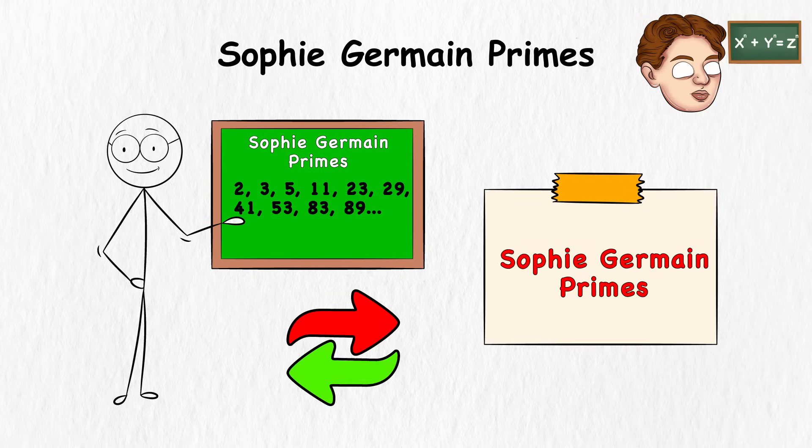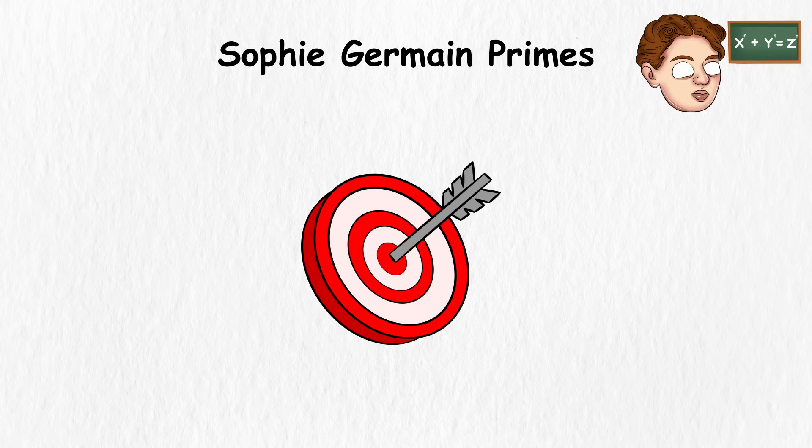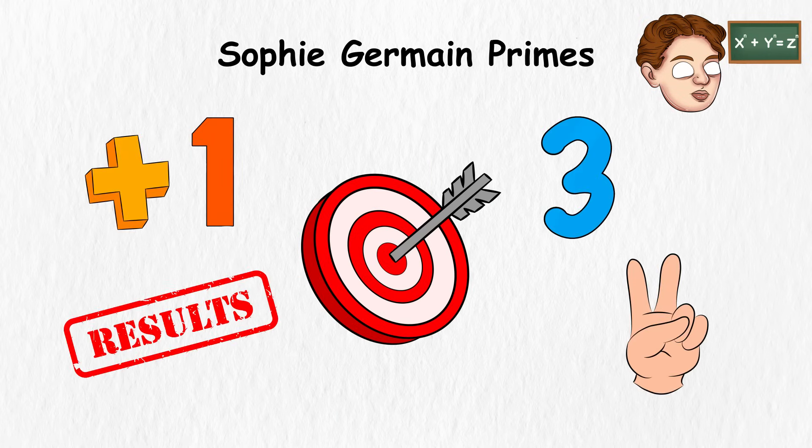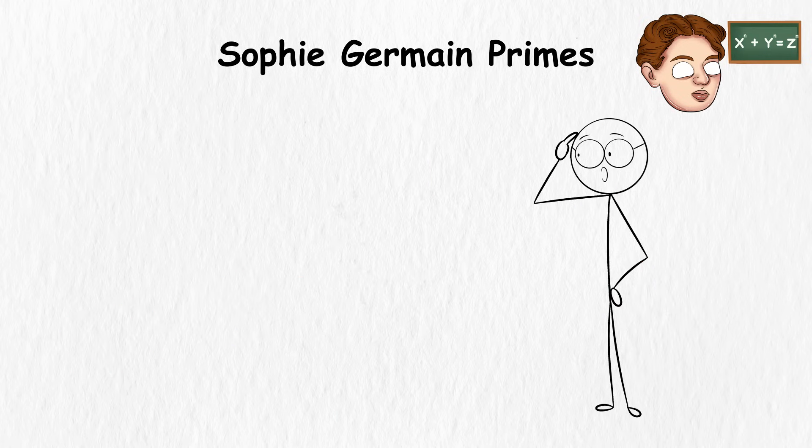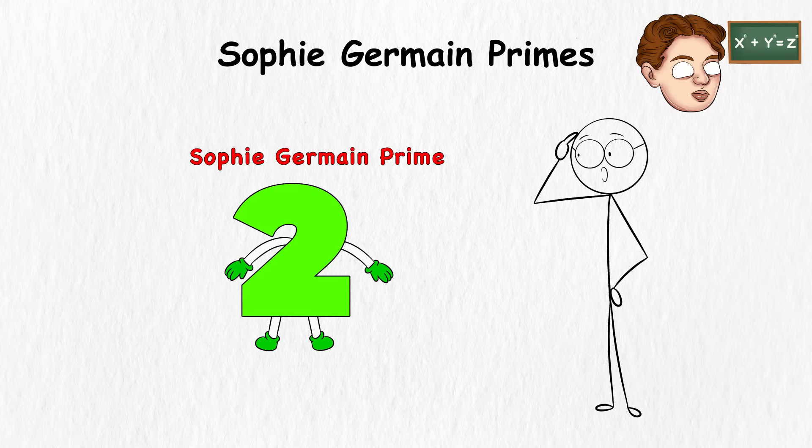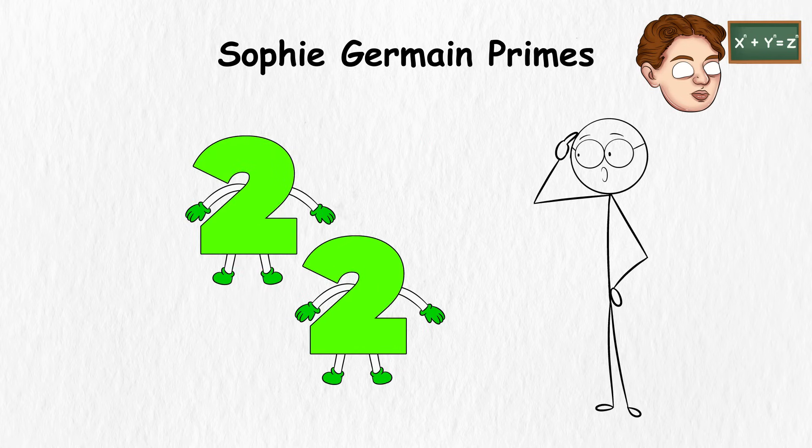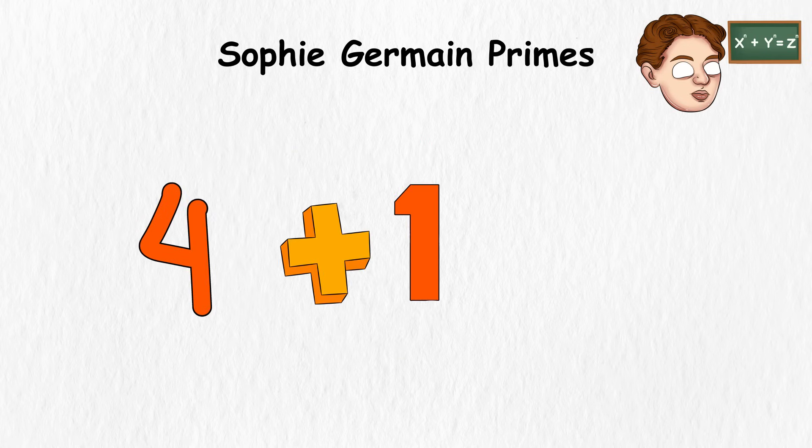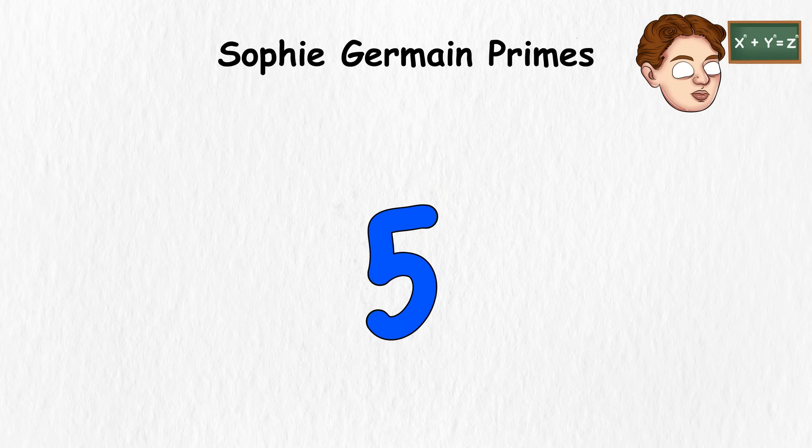For a prime number to be a Sophie Germain Prime, there's a little extra challenge. If you take that prime number and double it, then add 1, the result should also be a prime number. Let's take a look at some examples. The number 2 is a Sophie Germain Prime, because if you double it, which gives you 4, and then add 1, you get 5, and 5 is also a prime number.